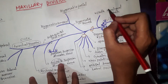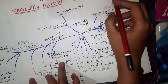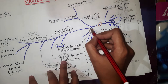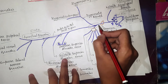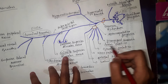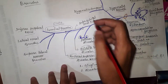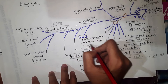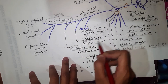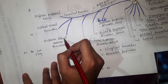To summarize: the first branch, the middle meningeal branch, supplies the dura mater in the cranium. In the pterygopalatine fossa there is the zygomatic branch and the sphenopalatine branches, which include the pharyngeal, lesser palatine, greater palatine, nasopalatine, orbital, and lateral posterior nasal branches. Before the infraorbital canal, the posterior superior alveolar branch is given off. In the infraorbital canal, the medial superior and anterior superior alveolar branches are given off. The terminal branches on the face are the inferior palpebral branch, lateral nasal branch, and superior labial branch.